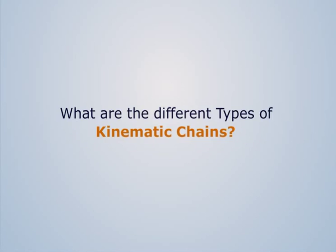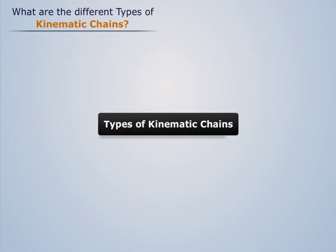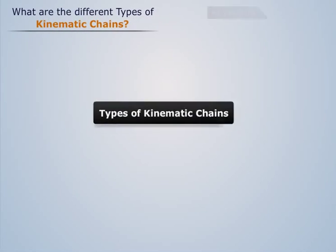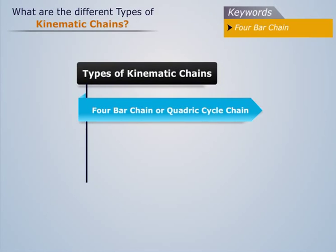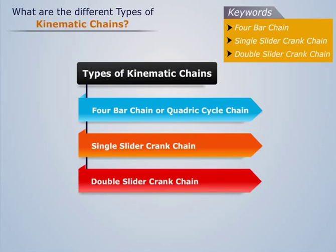What are the different types of kinematic chains? The different types of kinematic chains are: four bar chain or quadric cycle chain, single slider crank chain, and double slider crank chain. Let us now briefly describe each of them.